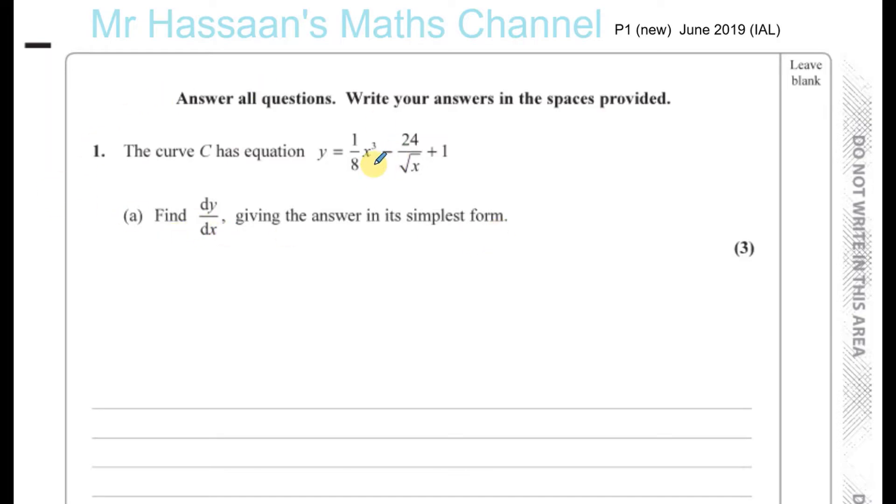Now, in order for us to differentiate something or to integrate something, we need to get it ready to be differentiated or integrated. So in order to get something ready for differentiation, what we must do is make sure that the letters are written in index form and in the numerator. The 1/8 x³ is fine. That's written in index form and as a numerator. But the 24 over root x, we have to write that in index form, not in surd form and with the x in the numerator.